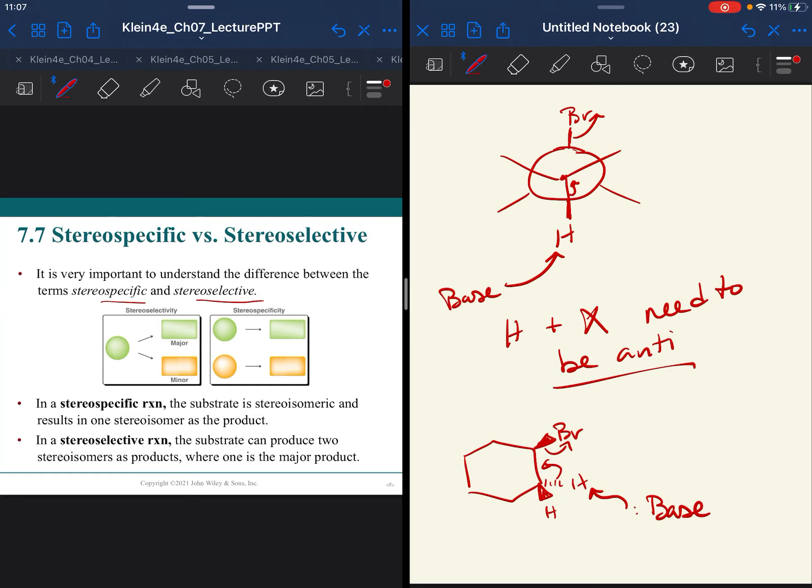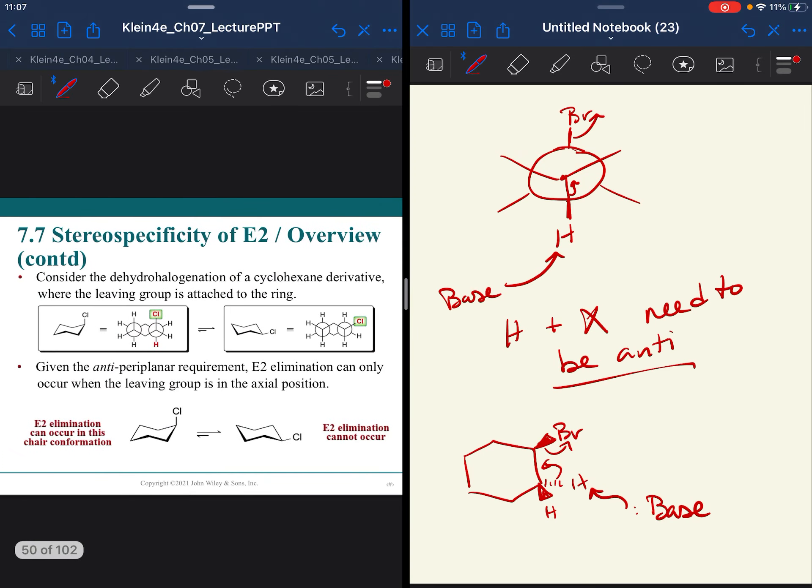Selective means that you have a major and minor products. Specific means you are only making one. If it is R versus S, selective means you would have both but one in a greater abundance. Specific would mean you only make one. That's good vocabulary that you should know. I will use those terms quite a bit.